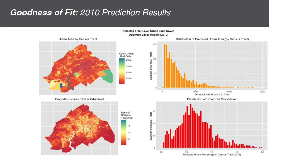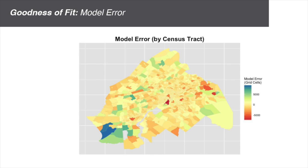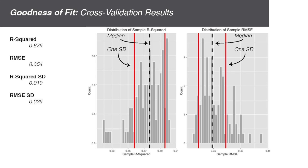I assess my model's goodness of fit by training it on 2000 data and predicting for 2010. I then compare those results with the observed urbanization rates for 2010. Like all models, this one includes error. What's interesting to note about this map is that the spatial pattern of the error is mostly random, which indicates that the model is able to pick up on the spatial autocorrelation in the dependent variable.